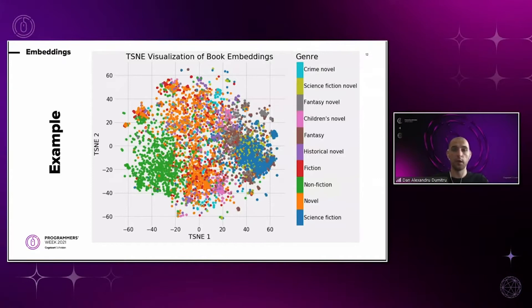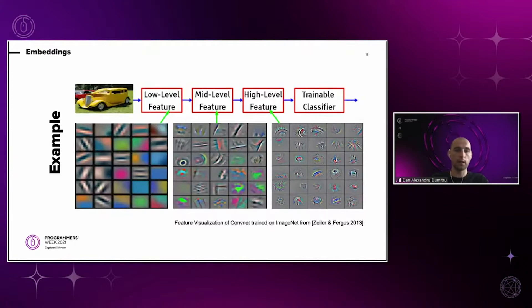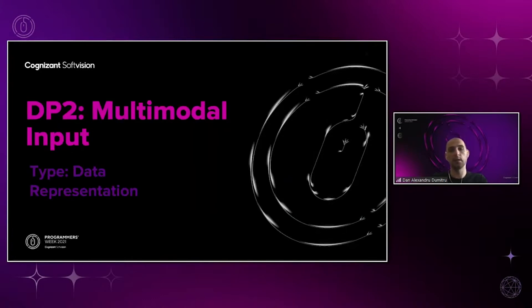Here is an example of book embeddings, showing how different data points with the same semantics — books with similar content — group together. This is only a 2D space and groups are harder to observe, but in reality this space has many more dimensions. Here is another example with image embeddings from convolutional layers. The difference here is that we have different embeddings at different levels within the convolutional neural network, and you can see how these embeddings hold different spatial pattern information depending on the level in the network.